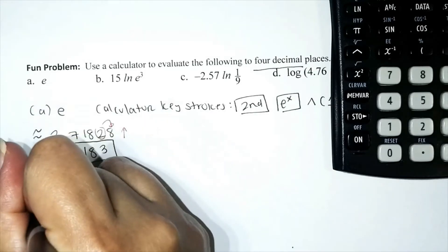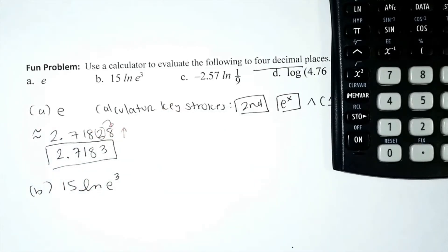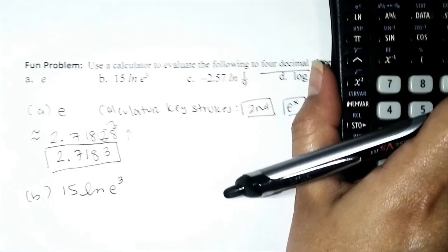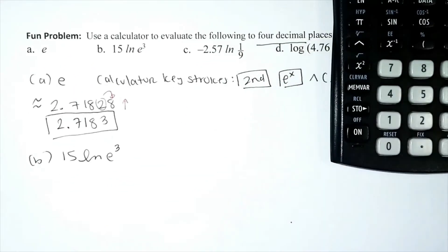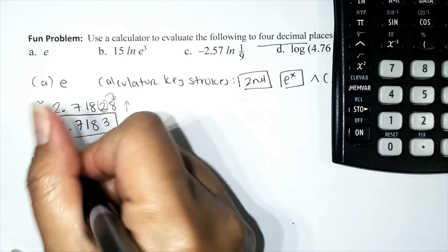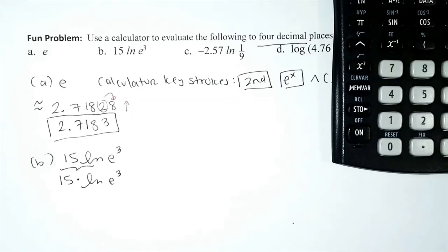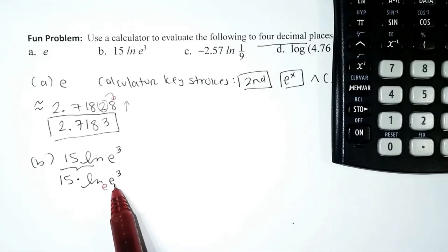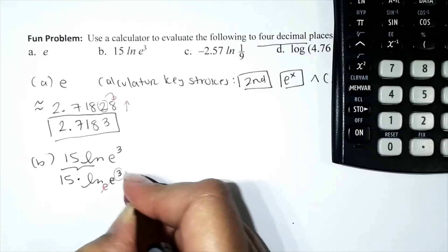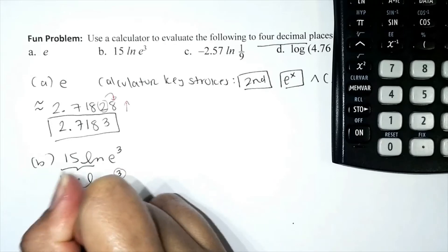Problem B: 15 times the natural log of e to the third power. We can actually do this one by hand. The operation between the number and the logarithm is multiplication: 15 times ln(e³). The base of the natural logarithm is e, and the base of the argument is also e — since they match, they undo each other, leaving just the exponent 3. So we get 15 times 3, which equals 45.